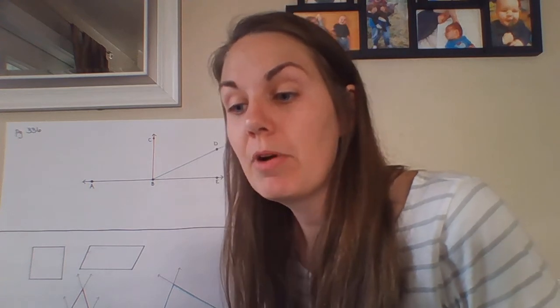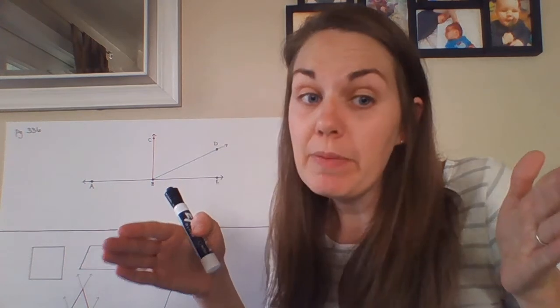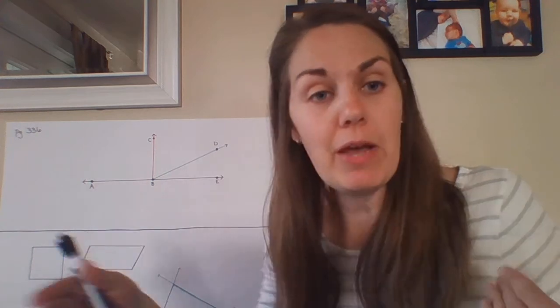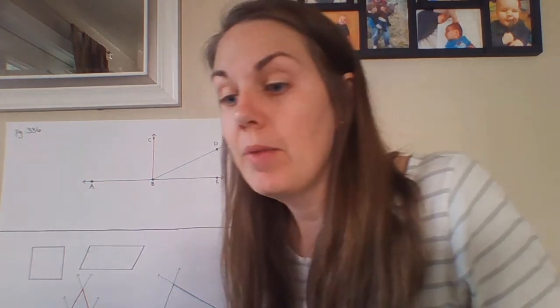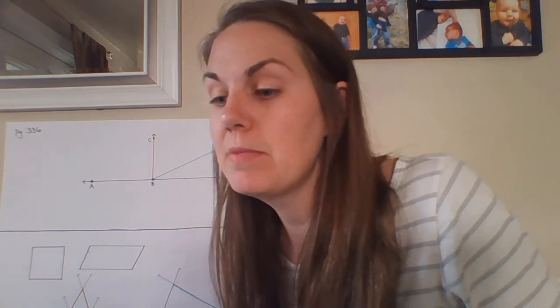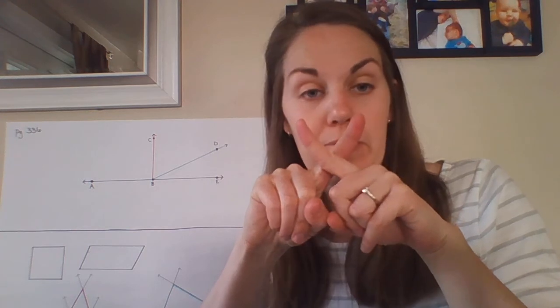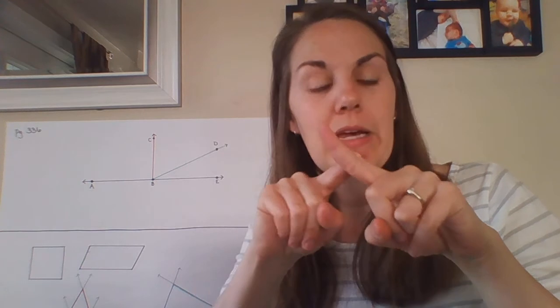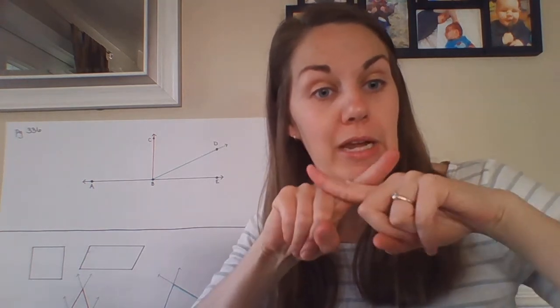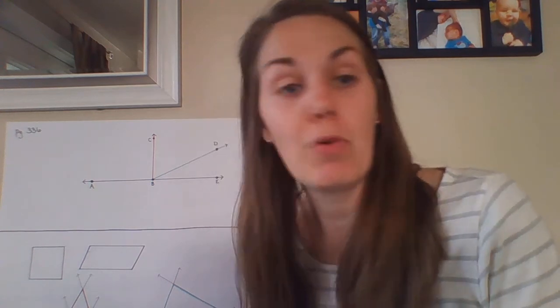Number 2 asks for a real-world example of a line segment — something with two definite start and end points, like the edge of a countertop, a bookshelf, or a door. Number 3 asks for a real-world example of an angle: two line segments meeting at a point — like scissors, where the two blades intersect and create different angles depending on how far open they are.